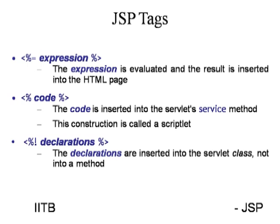The third tag is a declaration. If you want to declare any variable globally, you use the declaration tag. In the scriptlet (code) part, you can also declare variables, but the difference is that those are local. If you want a global variable, you must use the declaration tag. Not only variables — you can also declare methods in the declaration part and then invoke that method from your code.